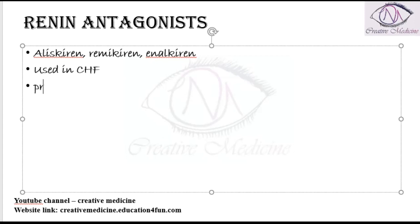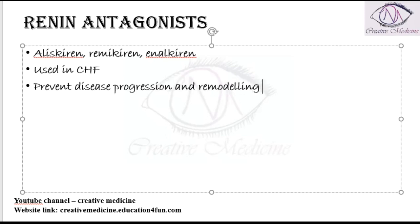These renin antagonists can be used in congestive heart failure. They will prevent disease progression and remodeling. These are newer drugs and hence they are not usually prescribed, because ACE inhibitors and ARBs perform the same action and have a better side effect profile, and as a result they are mainly prescribed rather than renin antagonists.